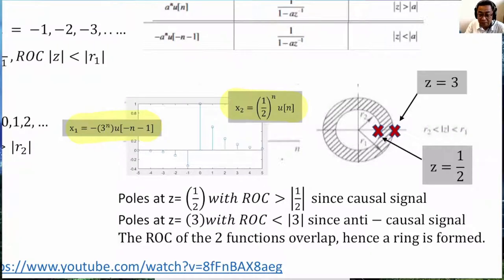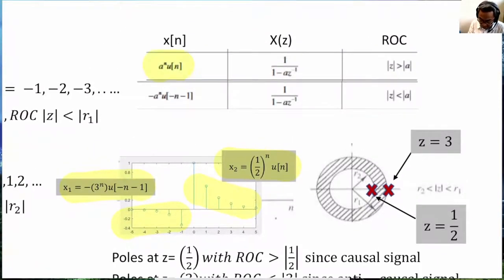So, this is the sequence. We take the Z-transform individually. For a^N U[n], the Z-transform is 1 over 1 minus a z^-1.